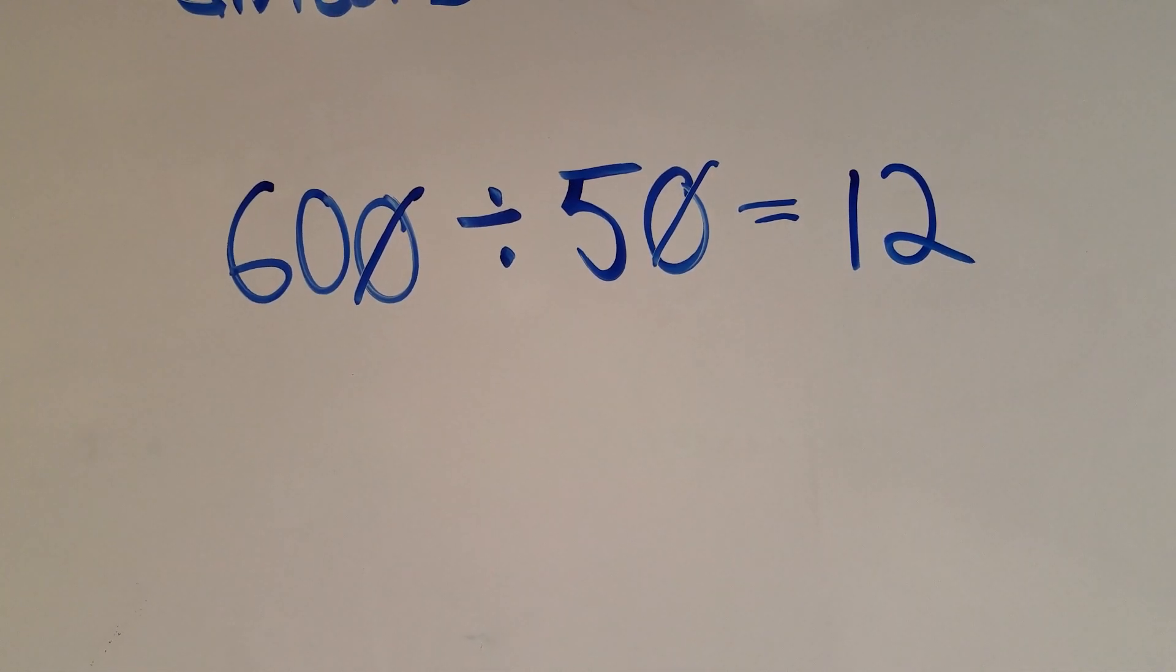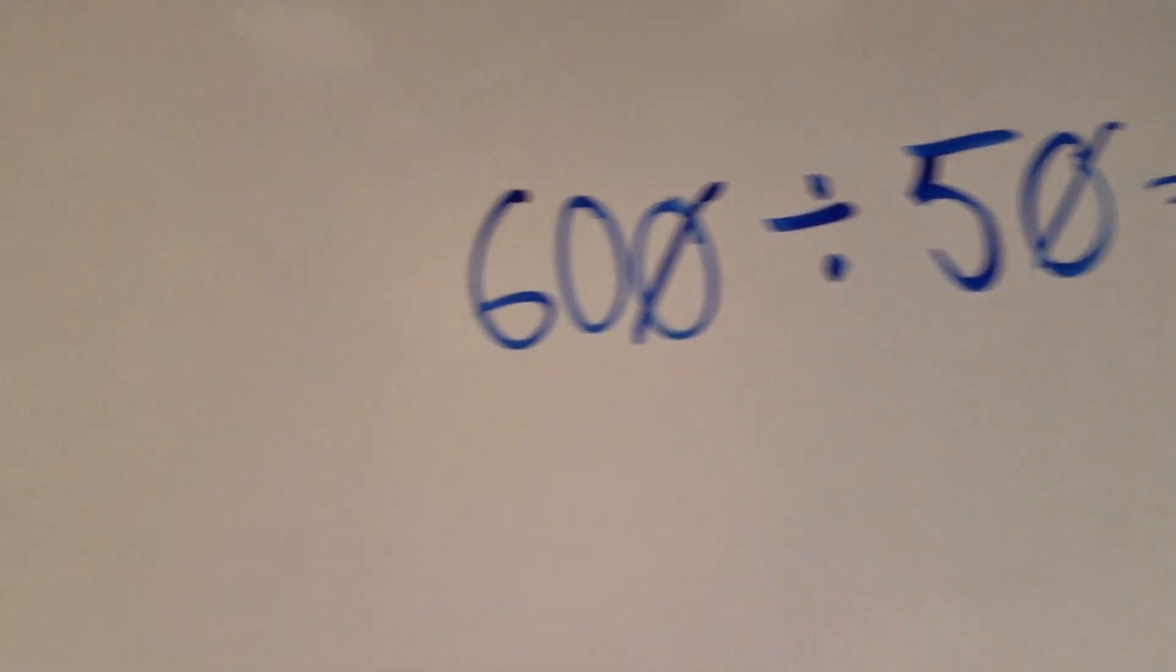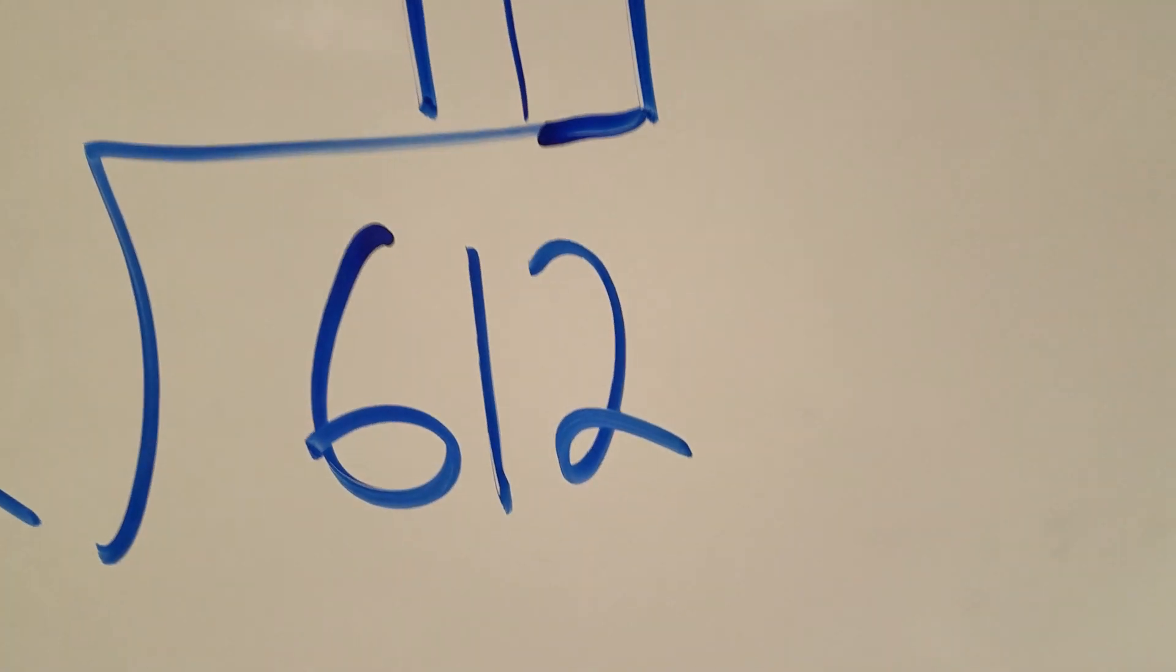60 divided by 5 is 12. 5 times 12 is 60, so I know my answer should be around 12. That means my answer has to start in the tens column.